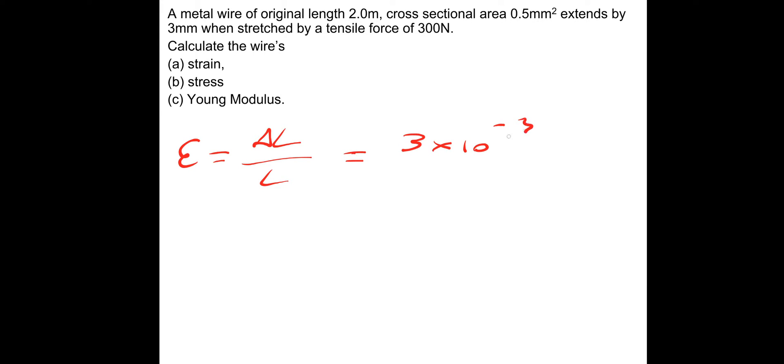The extension is 3 millimeters, 3 times 10 to the minus 3, divided by the length, 2 meters. That gives a strain of 1.5 times 10 to the power minus 3. If you want to put that as a percentage, which you typically wouldn't, that would just be 0.15%, times by 100.